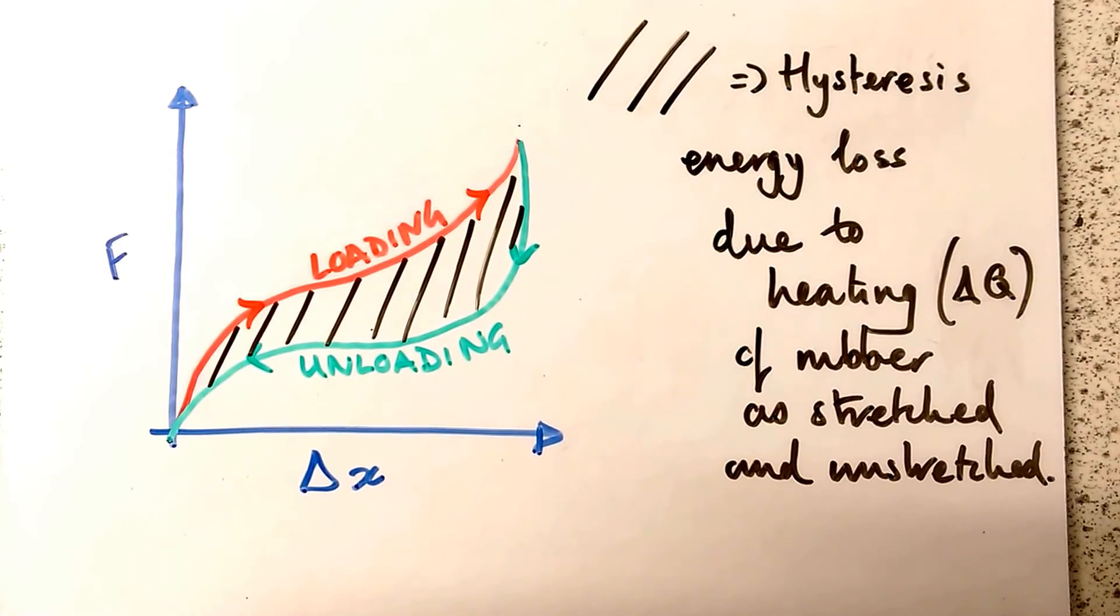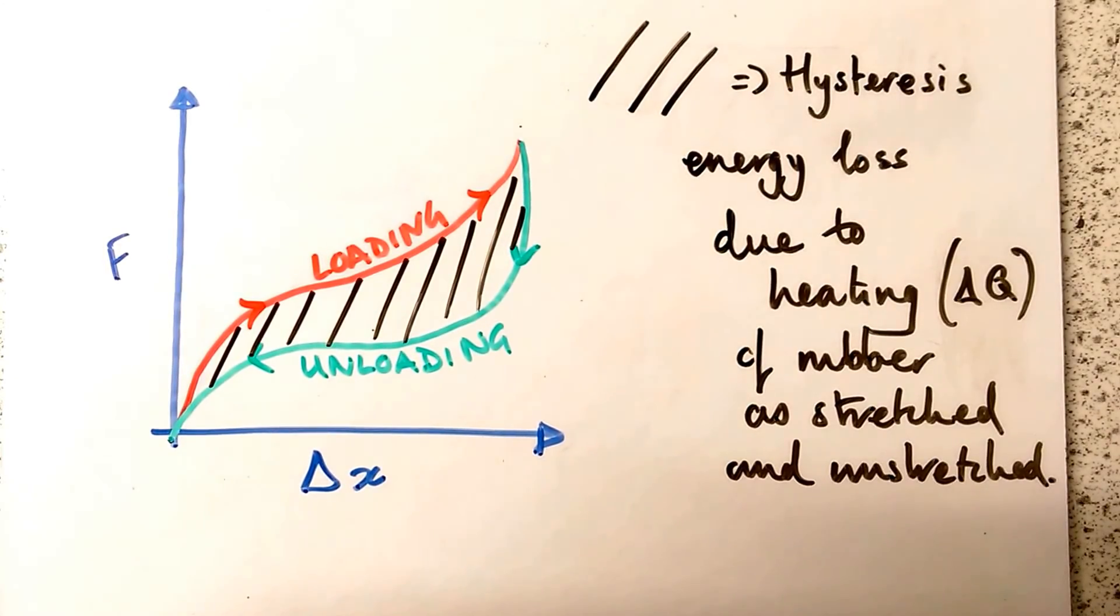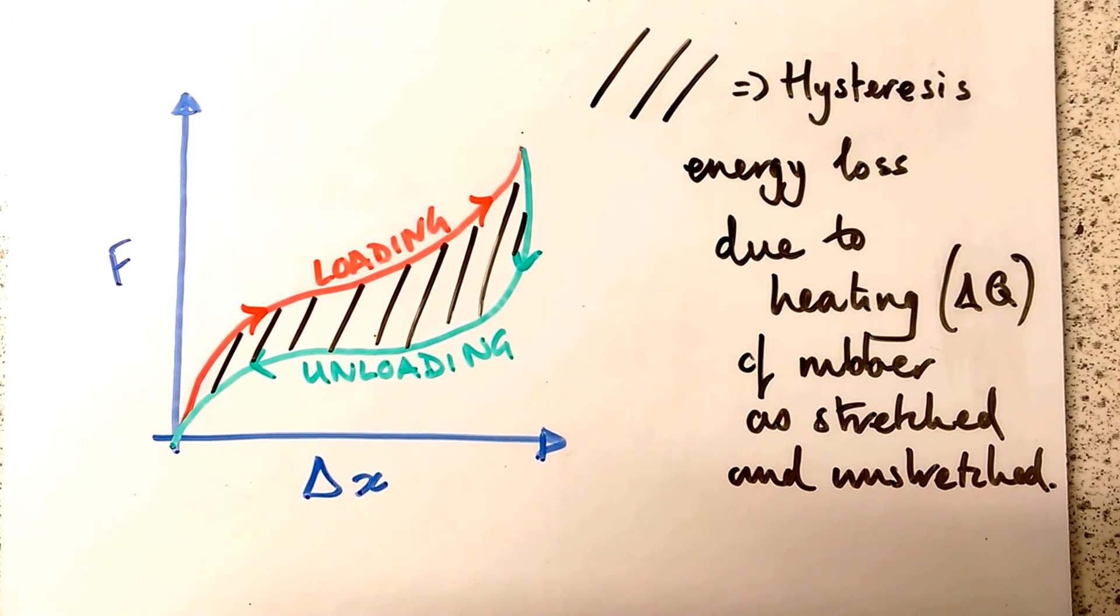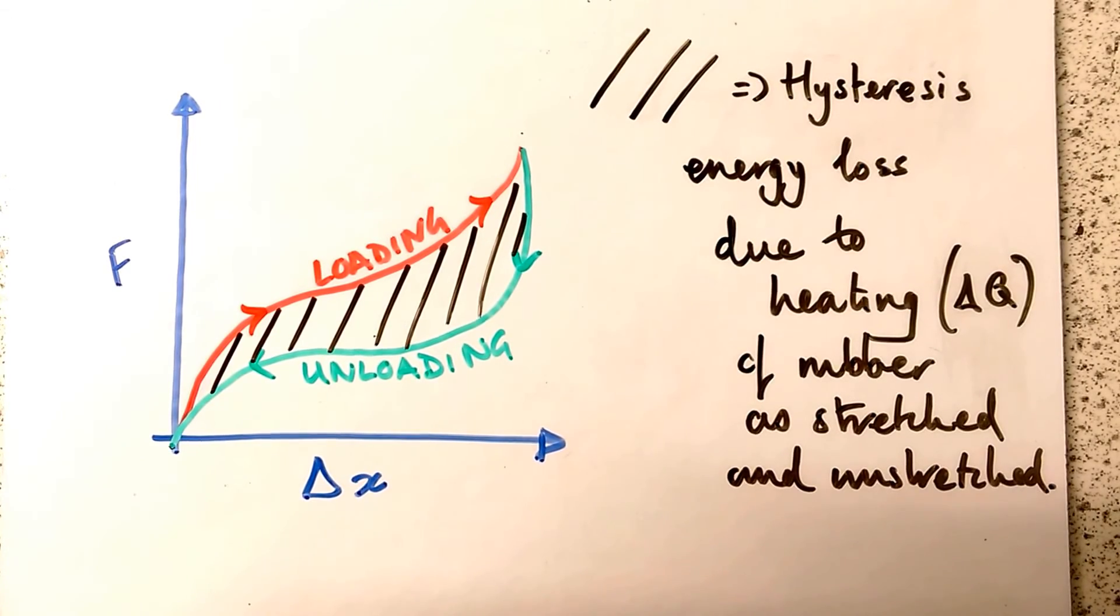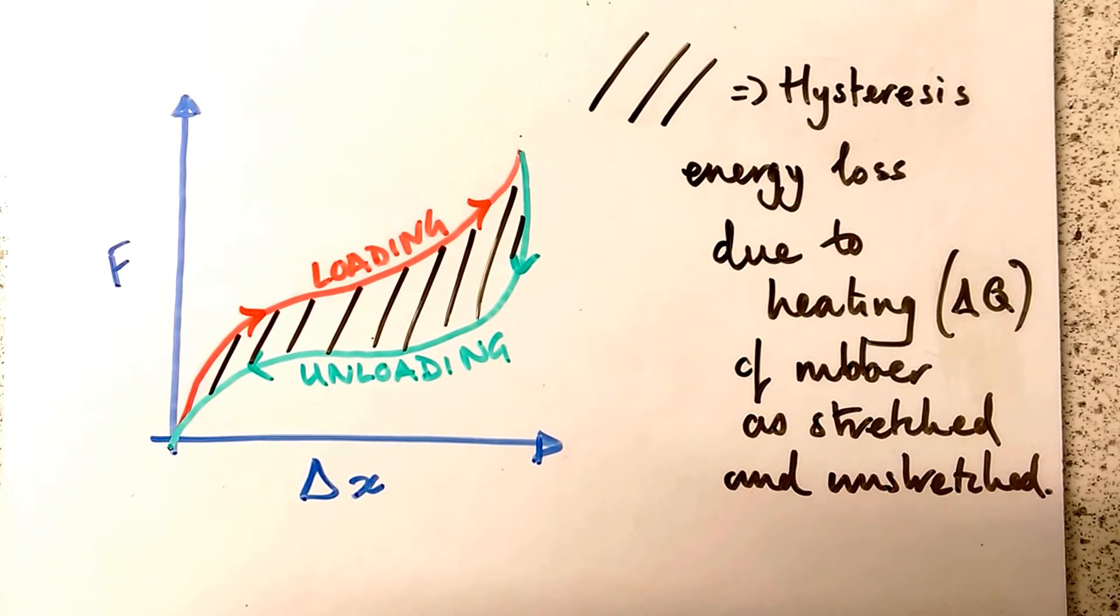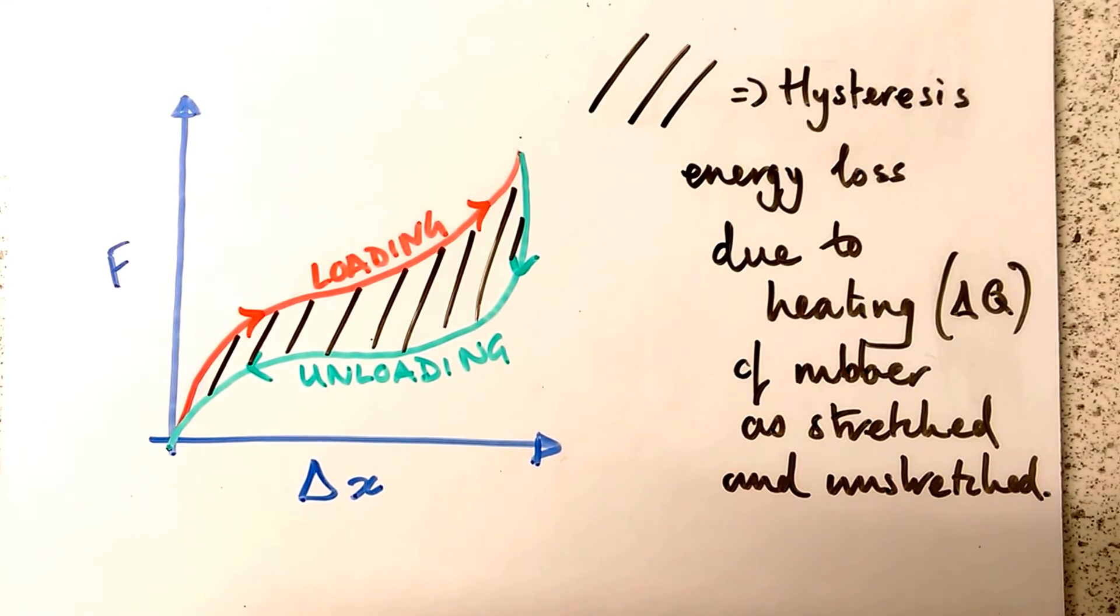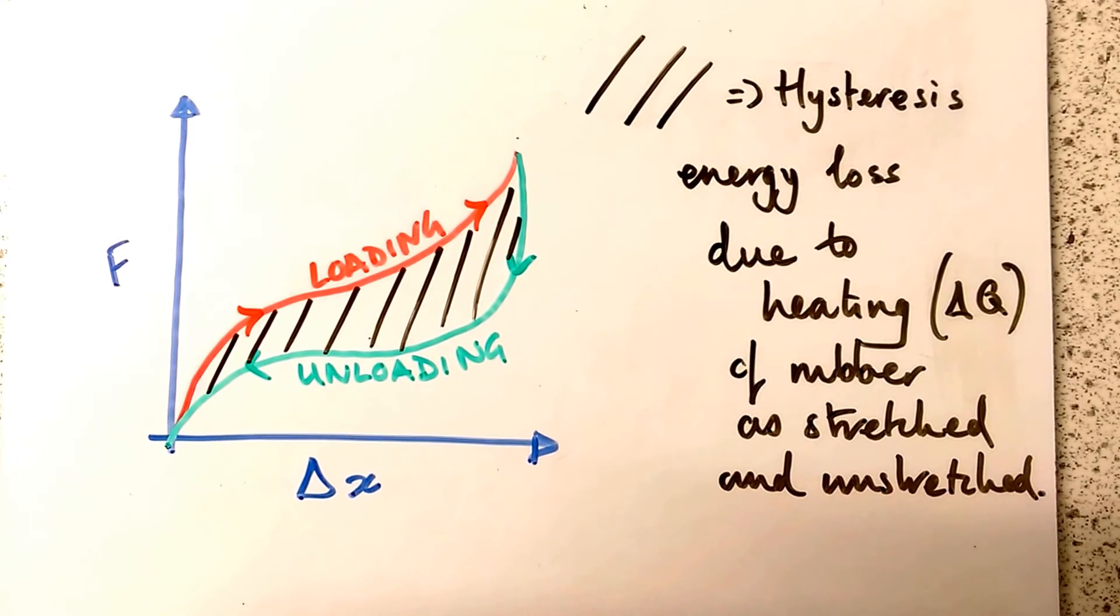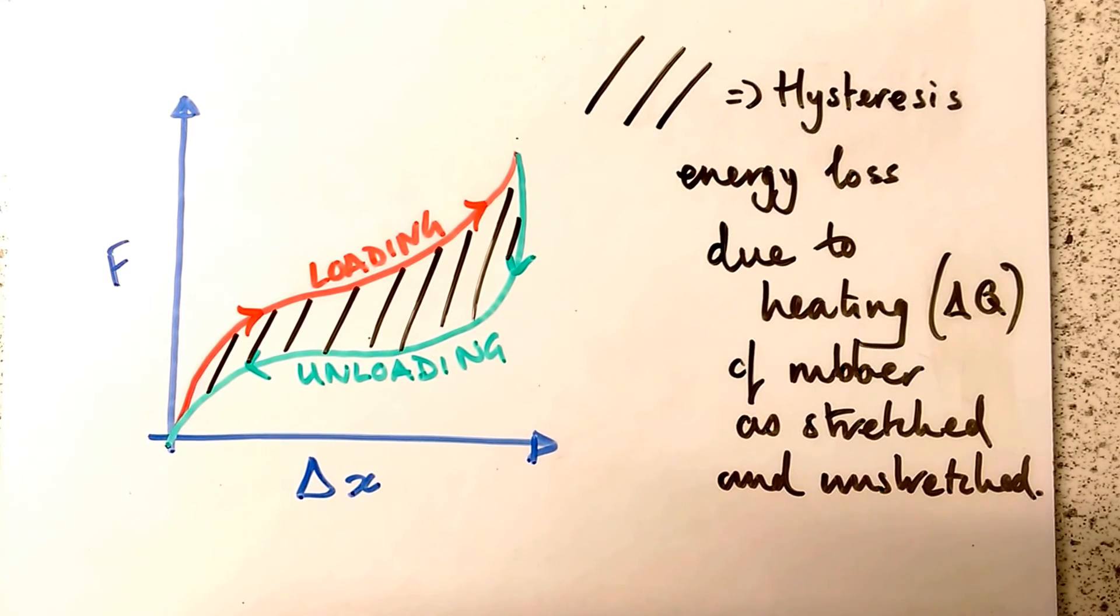So unloading has a different shape - the green line when we're unloading. Remember I said the area underneath a force-extension graph was the elastic strain energy. Well, that means when loading it, it has more elastic strain energy stored in it than when unloading. And that difference is the shaded area between the lines.